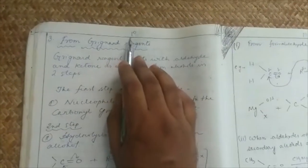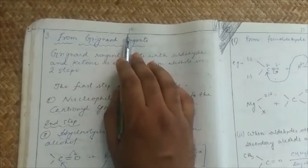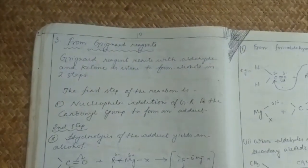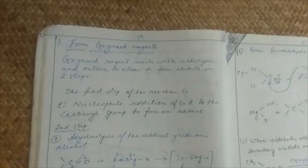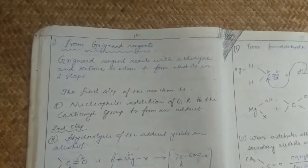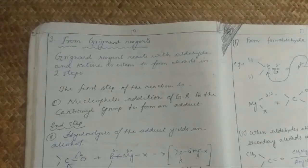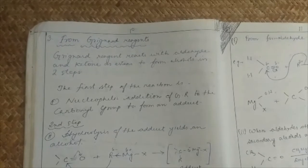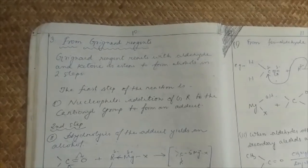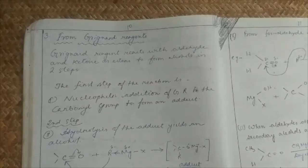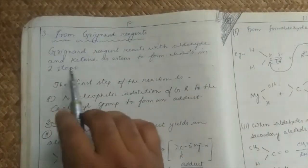We will be starting from page number 10. Page number 10, the alcohol in Grignard reagent is prepared for the treatment of Grignard reagent called RMgX. We have already discussed in the haloalkane and haloaryl chapter.